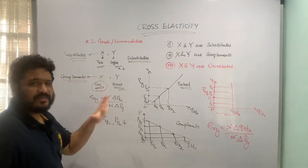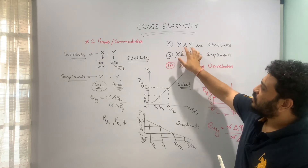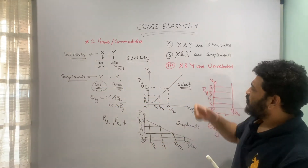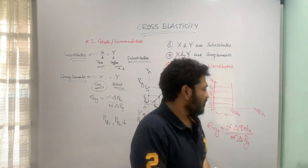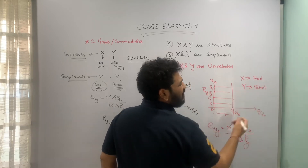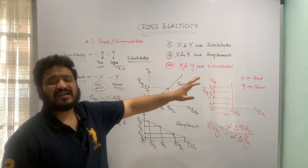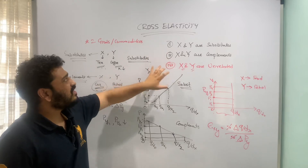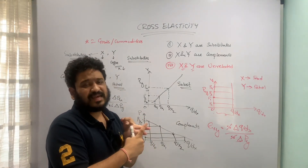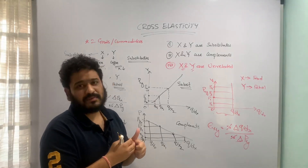This is the formula to calculate cross elasticity of demand — Exy equals percentage change in quantity demanded of good x due to percentage change in price of good y. In case of substitutes the graph slopes positively, for complements it slopes negatively, and for unrelated goods the cross elasticity is zero shown as a vertical line. I hope the idea of cross elasticity of demand is pretty much clear. We will meet in the next lecture where we will start with consumer's equilibrium. Thank you.